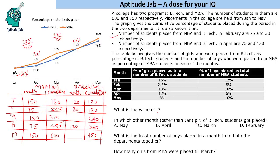So in March for BTEC there are 240 students placed cumulatively, and the month-wise value for March is 90. The cumulative builds as: January 120, plus 30 in February gives 150, plus 90 in March gives 240, plus 120 in April gives 360, plus 90 in May gives 450. This completes the table with students placed each month. Now for R: R% of BTEC students are placed till March, and 240 out of 600 is 40%. So the value of R is 40.